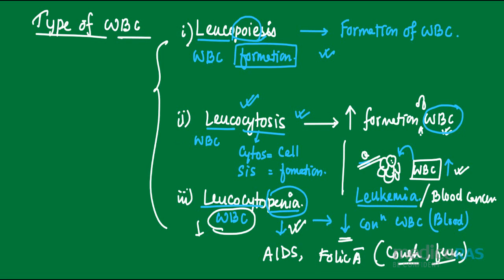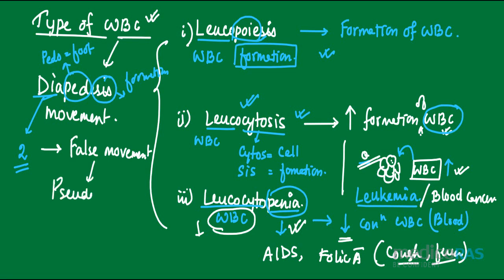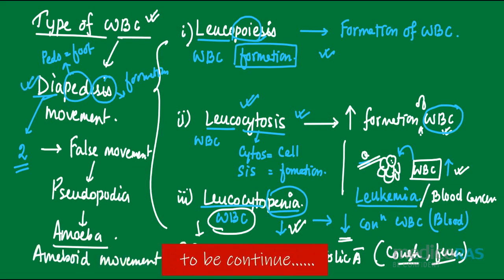These are the terms we need to know before discussing WBC types. Apart from that, there is another term: diapedesis movement. The movement of WBC is also known as diapedesis movement. 'Dia' means more than two, and 'pedesis' relates to foot or pseudopodia, with '-cis' meaning formation — so the cell can make more than one type of pseudopod to move. In simple language, this is false movement, which is related to the amoeba. Therefore, the movement of WBC is also known as amoeboid movement.